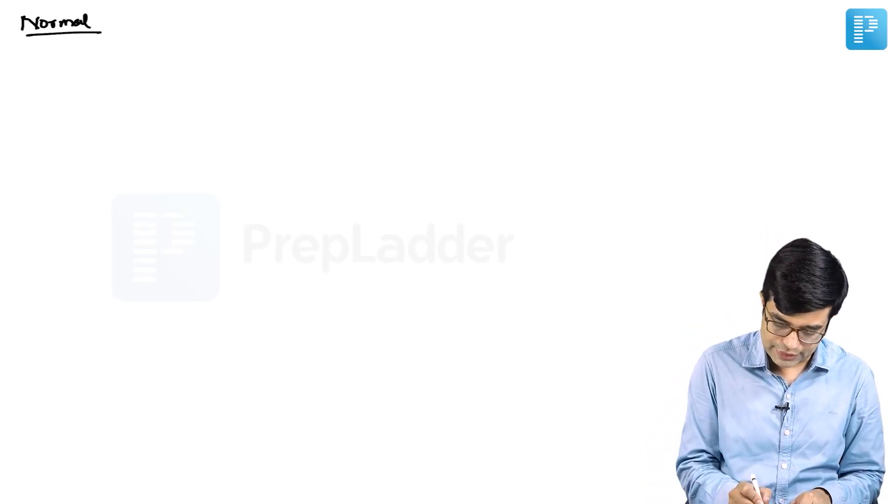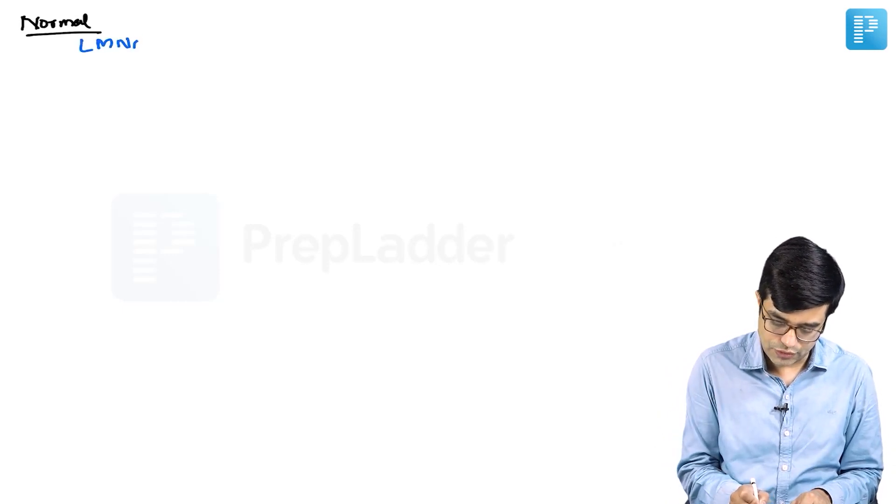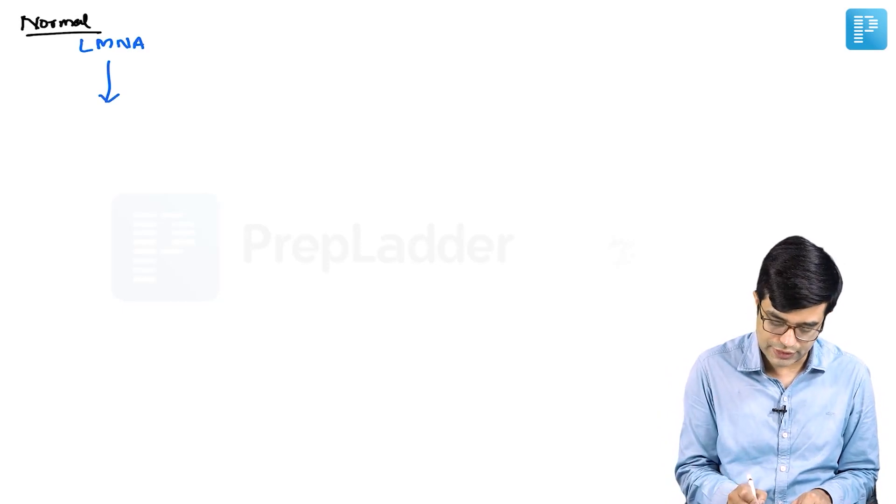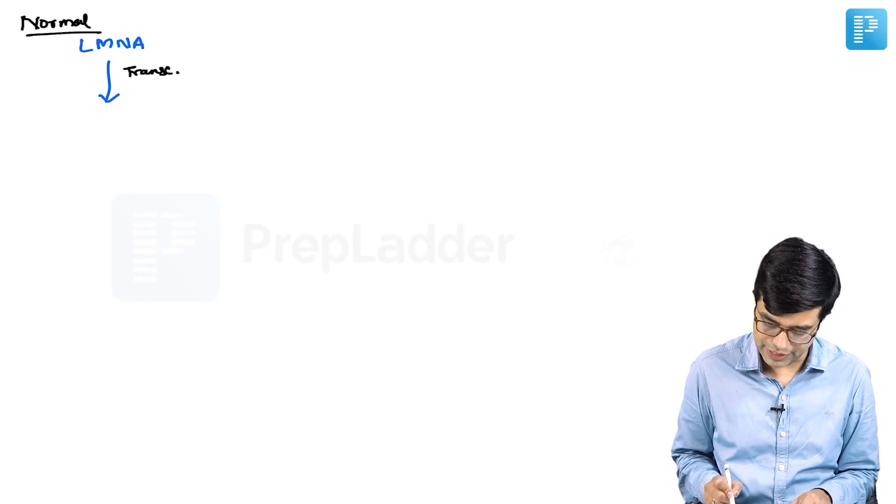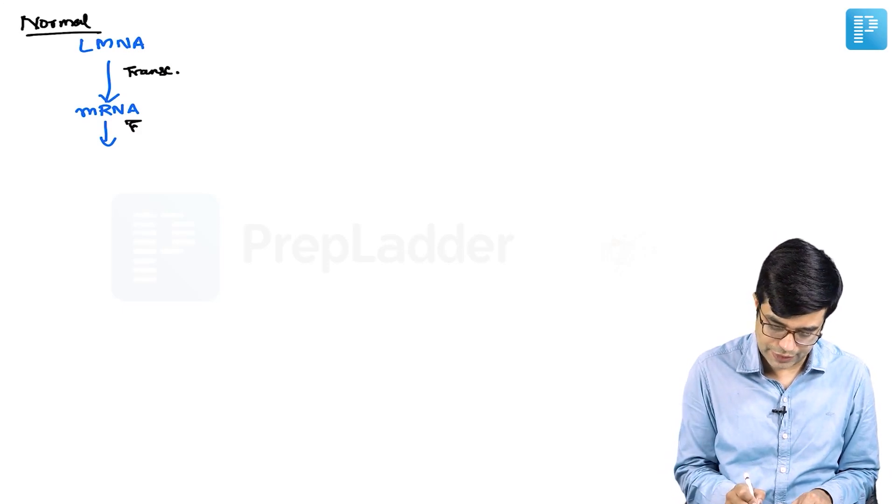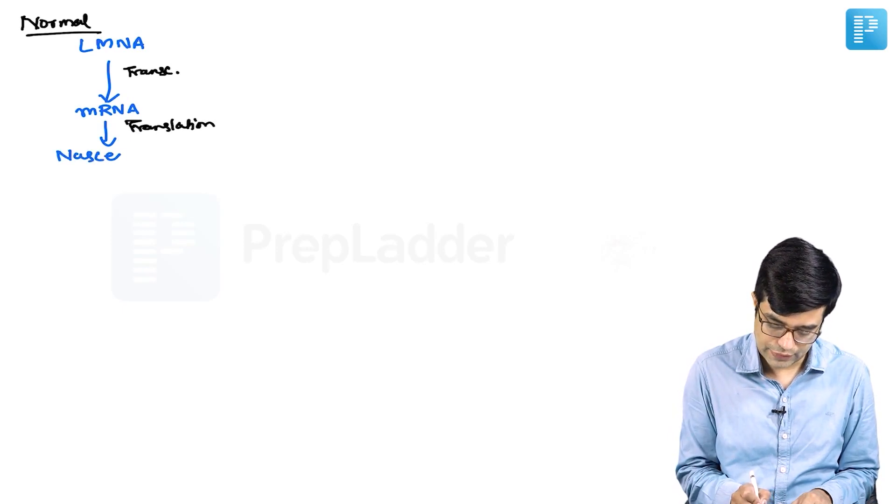The normal process: LMNA gene will first undergo transcription and translation. I'm just combining both processes. First there will be mRNA formation, and from there you will have translation happening, forming the nascent protein.